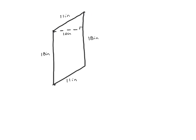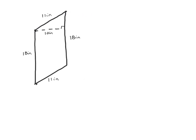Let's look at another parallelogram example. We want the numbers that meet at a right angle: that is our 10 and our 18. Plugging into A equals B times H, with 18 as the base and 10 as the height, we get 18 times 10 equals 180. Including correct units, our area is 180 inches squared.